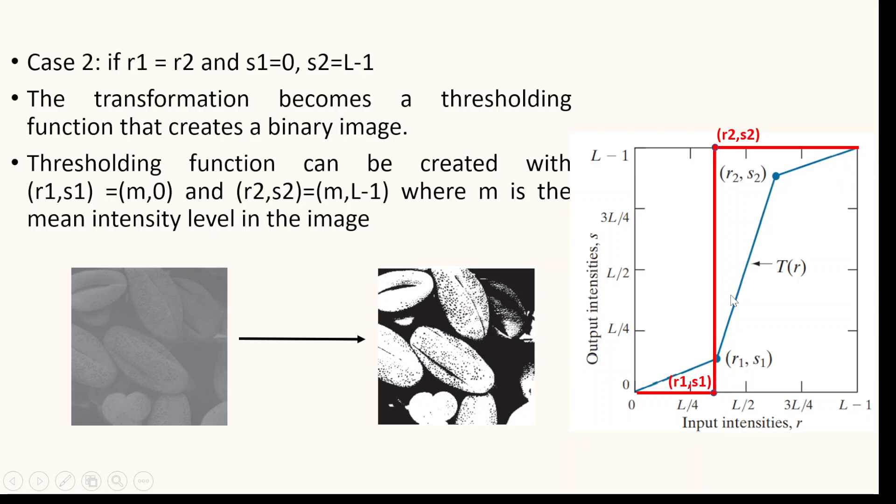So your general transformation function which was given in blue color, that is R1, S1 and R2, S2, changes to what is shown in red color here. The transformation becomes similar to a thresholding function and creates a binary image because your lowest pixel will be pure 0 and white pixel will be maximum 255.